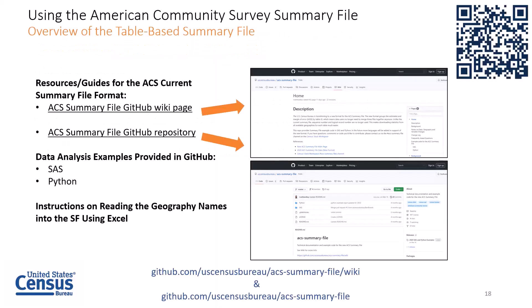The ACS webpage points to two external sites for accessing additional information on the table-based format. The GitHub Wiki page provides documentation about the table-based format such as notes on data, geography, variable changes, example code, and other important general information about the ACS summary file. The GitHub repository page currently provides examples of SAS and Python code to help users get started, and also allows users to manage their work and collaborate with others.